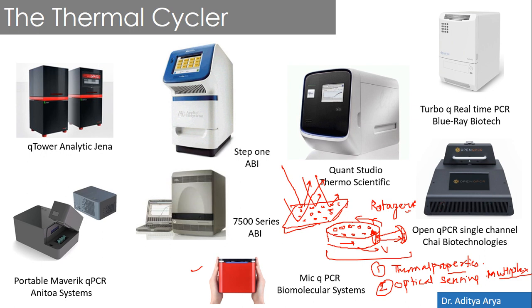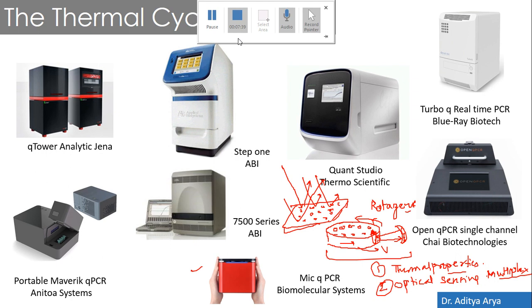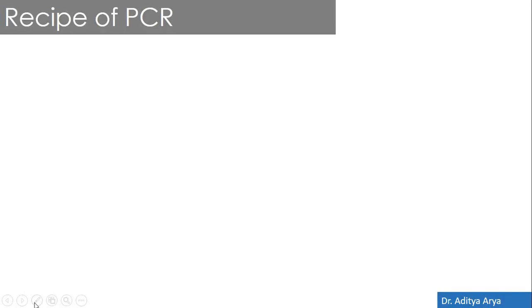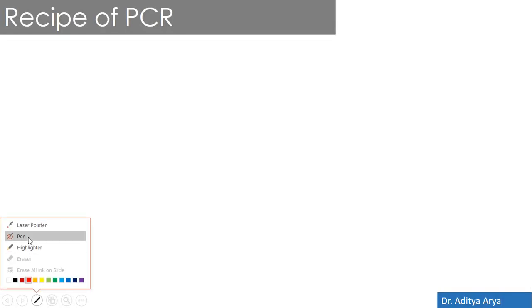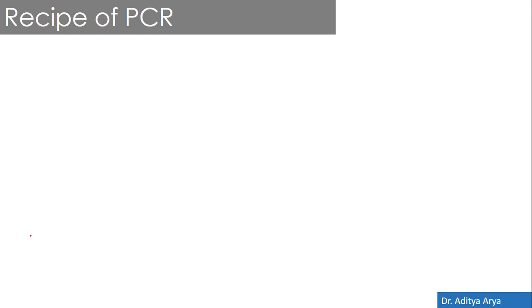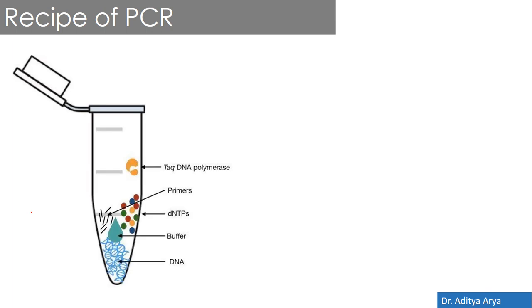That covers the various types of thermocycler models. Now we will look at the basic mechanism of PCR. The recipe of PCR is very simple and made up of some essential ingredients. One of the most important is your DNA, also known as the template — the DNA of interest that needs to be amplified.